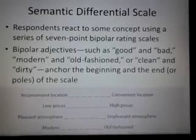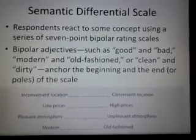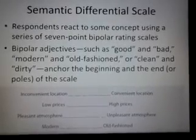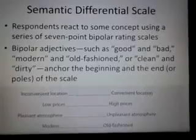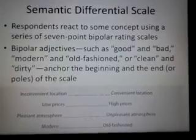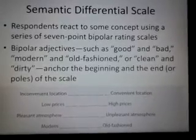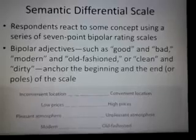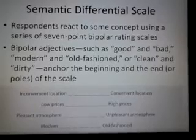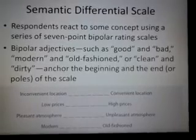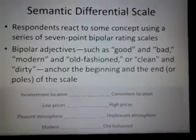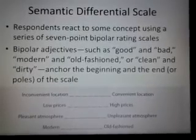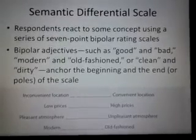These are two poles, and those two poles have words with opposite meaning — that is why this is called bipolar. So for example: inconvenient location to convenient location, low price to high price, and so on. This is a 7-point bipolar scale.